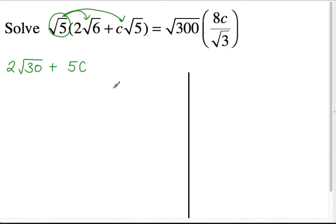Good. So any root times itself comes out. So root 5 times root 5, root anything times that same thing will come out from underneath the square root sign, 5c. Good? Okay.